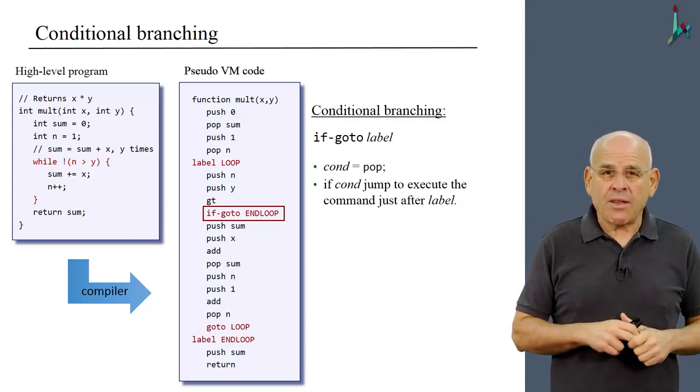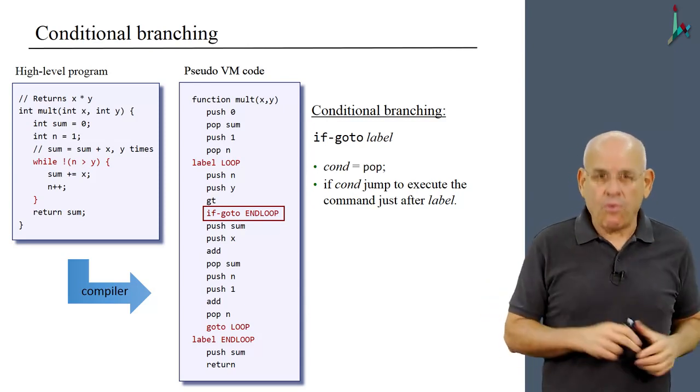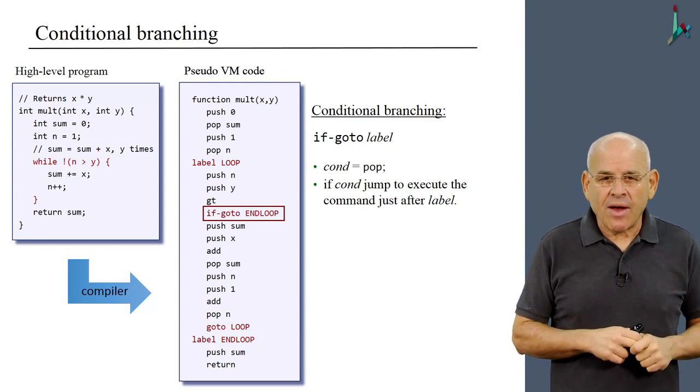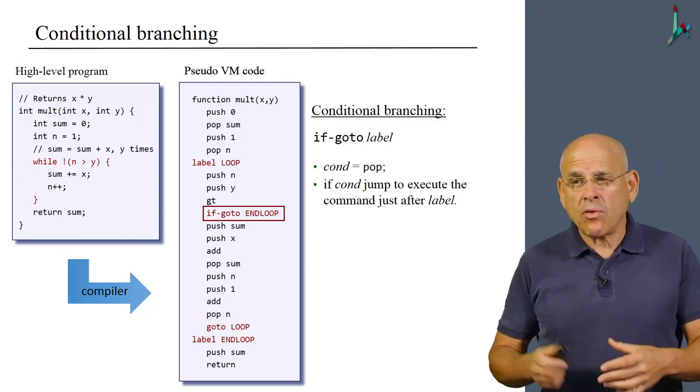The condition was as long as it is not true that n is greater than y, do this and that. So what we have here is the command if-goto endloop. That's what the compiler has generated.